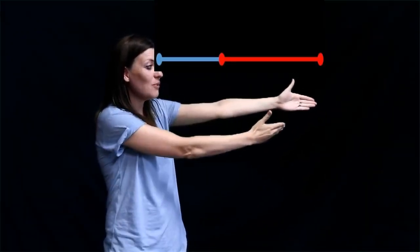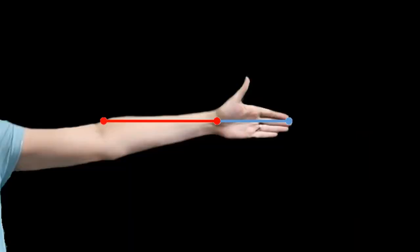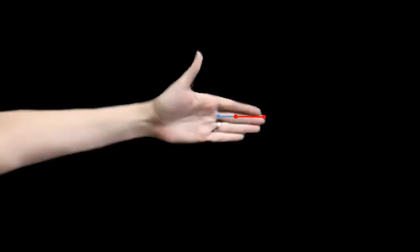Now let's take this closer to home. Hold out your arm. Look at the distance between your shoulder and your elbow — that's 1. And from your elbow to your fingertips is 1.6. The distance from your fingertips to your wrist is 1, and from your wrist to your elbow is 1.6. From the furthest tip of your finger to the bottom of your fingers is 1, and from the bottom of your fingers to your wrist is 1.6. Now check out the spacing of your knuckles — 1 to 1.6.